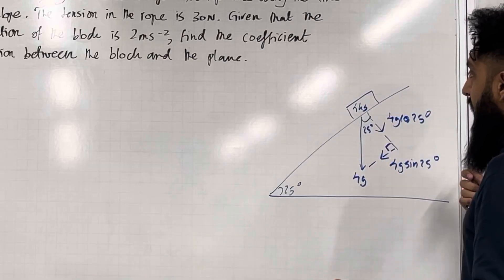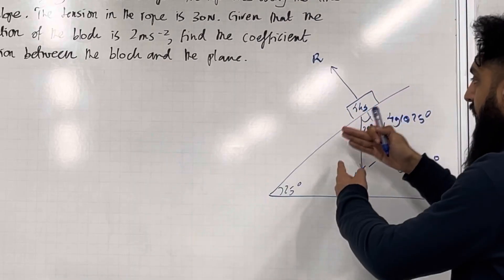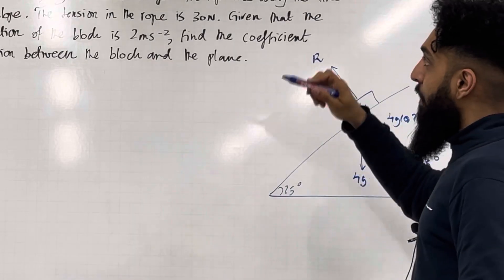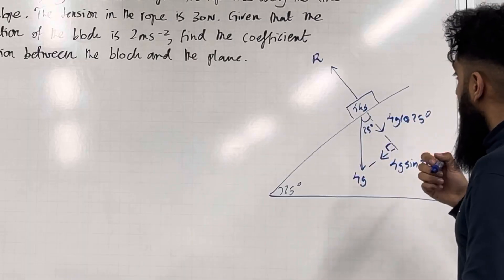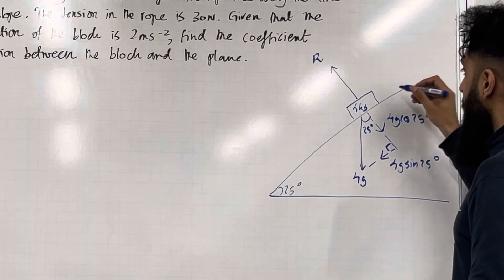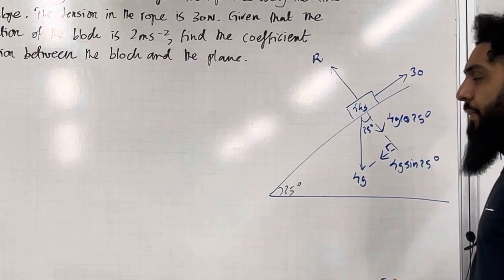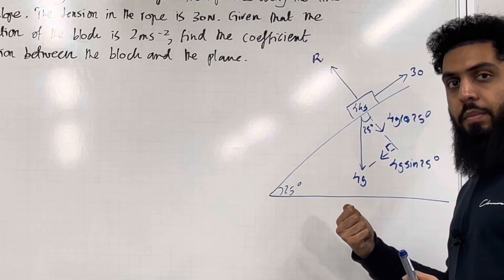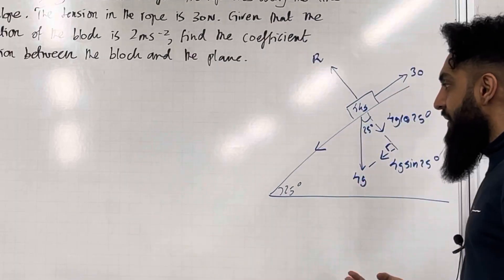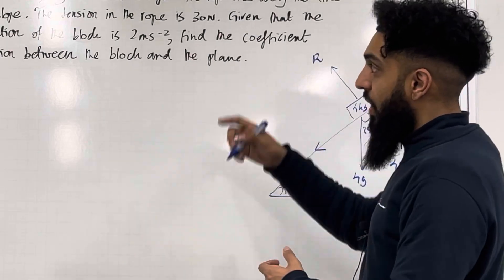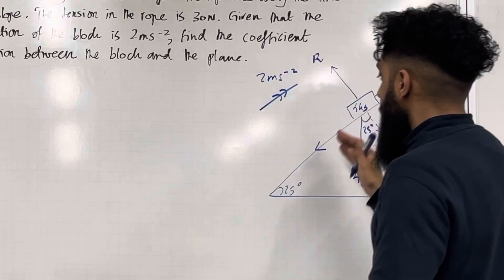Since this block is in contact with the rough slope, there will be a normal reaction coming out of the block, which we call R — it is perpendicular to the rough slope. The rope lies along the line of the slope, so the tension of 30 newtons acts parallel to and up the slope. Since this block is being pulled up the rough slope, there will be friction acting down the slope in the opposite direction, and that friction is at its maximum because the block is accelerating at 2 metres per second squared up the slope.